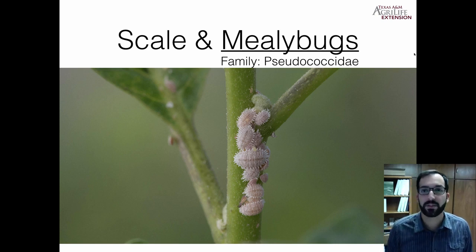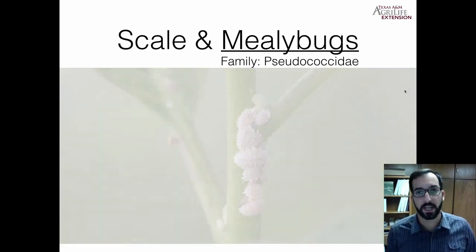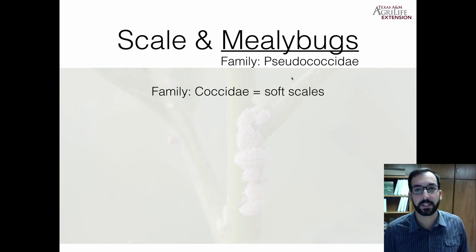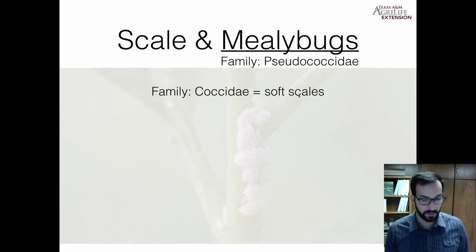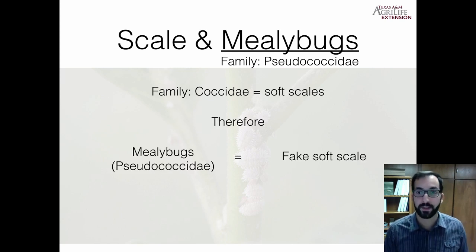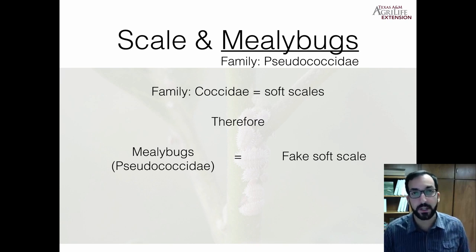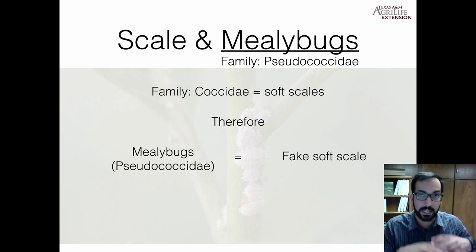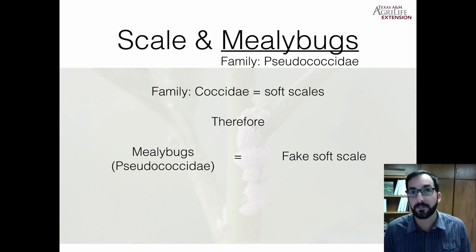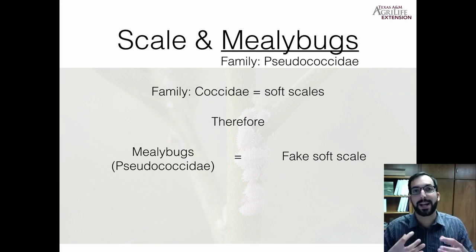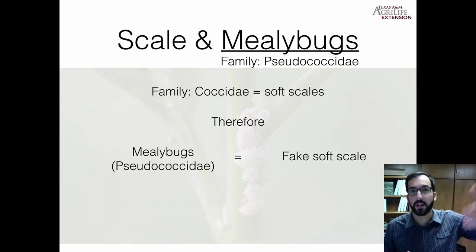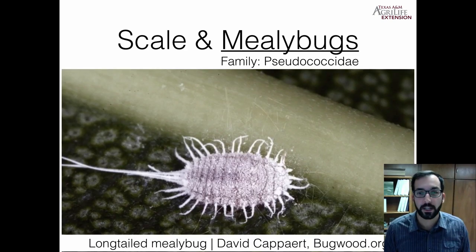Mealybugs are in the family Pseudococcidae — 'Coccidae' is the word for soft scales, so Pseudococcidae are basically fake soft scales. They're very similar to soft scales in that they produce honeydew and develop a waxy layer on the outside. The difference is the females lay clutches of eggs inside this waxy layer, but the female does not get stuck — she can go on and lay multiple clutches of eggs.